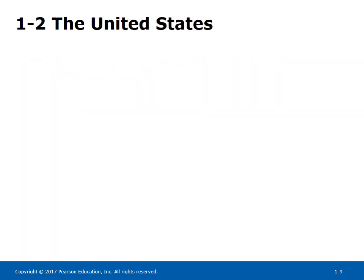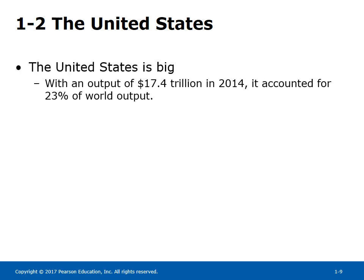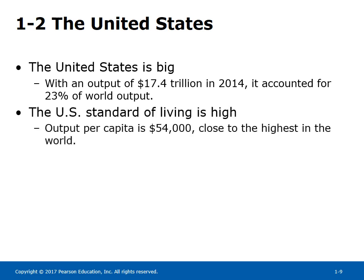The United States: In the following sections, for each economy we ask two questions — how big is the country from the economic point of view, and what is the standard of living in that country? The United States is big. With an output of $17.4 trillion in 2014, it accounted for 23% of world output. The US standard of living is high; output per capita is $54,000, close to the highest in the world.